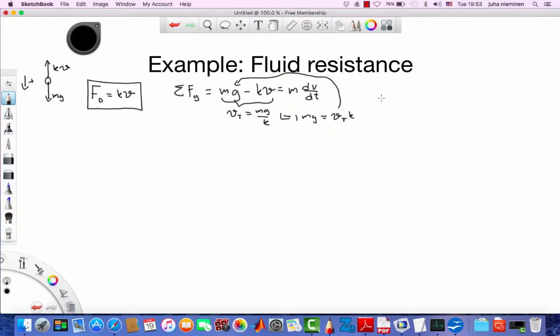And what do we get then? So we have vt times k minus k times v equals dv over dt and then there's mass.